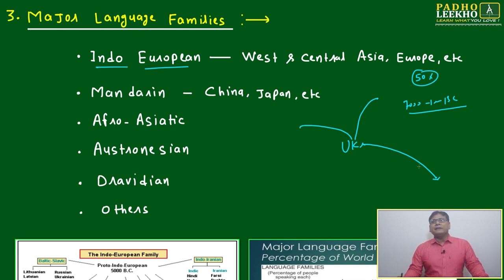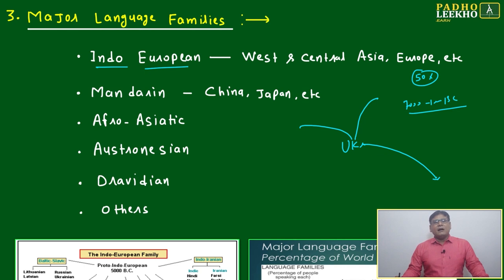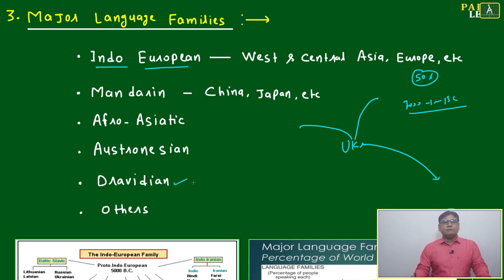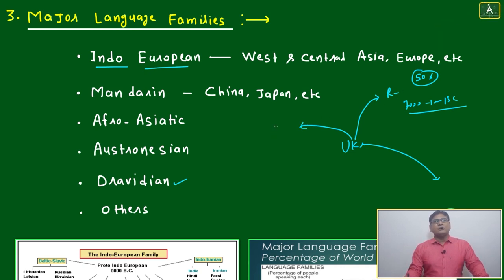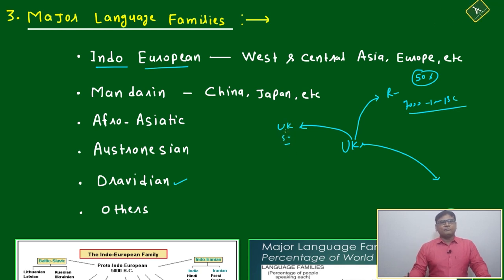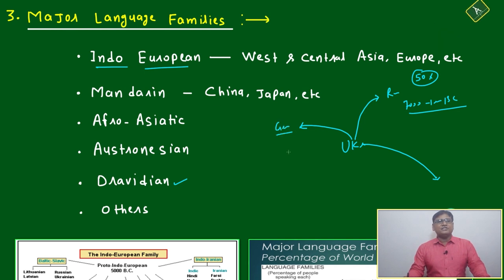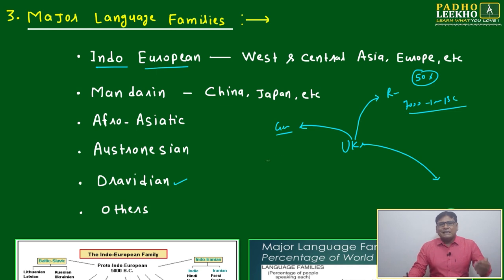From Ukraine, they migrated in three different directions. One group went toward Arab, Iran, Afghanistan, and India — the southern peninsula. India had a different language family called Dravidian. Another group migrated toward Russia, and another group migrated toward other parts of Europe like the UK and Spain.